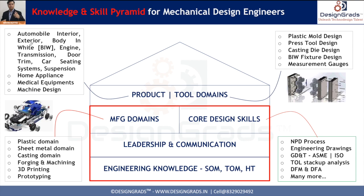There are many domains in product design — automobile interiors, exteriors, body-in-white, engine design, transmission, door trims, car seating, suspension, and many more within automobile alone. Apart from automobile, there are domains in home appliances, medical equipment, and machine design. The biggest mistake many engineers make is skipping the foundational elements and directly learning a product domain, which makes job hunting harder since you're limited to a very niche domain. But if you build the foundation first, you can get a job in any of these domains.